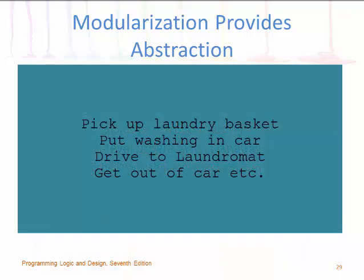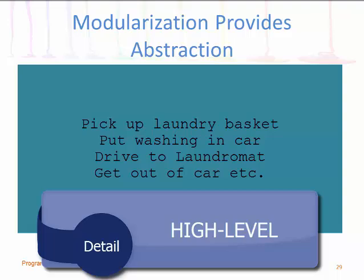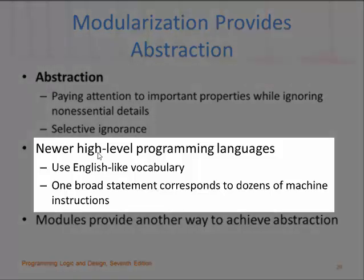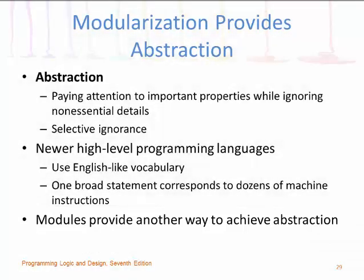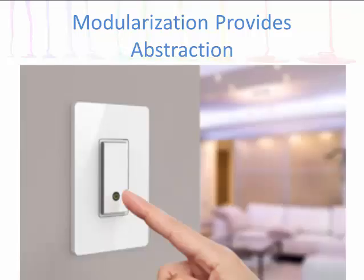For example, you can create a list of things to accomplish today: do washing, call grandma, start an assignment — these are all low-level details. Without abstraction, the list would begin: pick up the laundry basket, put washing in the car, drive to the laundromat, get out of the car, etc. — that would be high-level detail. Our high-level details correspond to newer high-level programming languages which use English-like vocabulary, where one broad statement corresponds to dozens of machine instructions. Modules provide another way to achieve abstraction. A good analogy is items in our world that perform single functions, such as a light switch which only controls the lights — not the air conditioning, overhead projector, computers, or fire alarms.